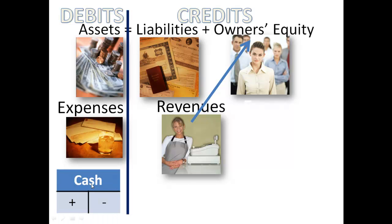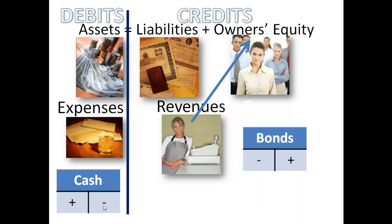A debit account, such as cash, is going to be debited — the number will be written in the left column in order to increase it. To decrease it, it will be credited — the number is written in the right column, the credit column. On the other hand, credit accounts, such as bonds payable or a liability: to increase them, you will credit them and write the number in the right column; to decrease them, you will debit them and write the number in the left column. If you accidentally debit a credit account or credit a debit account, the amount will go in the wrong direction.